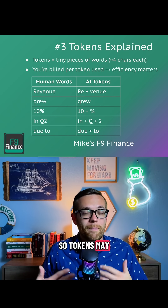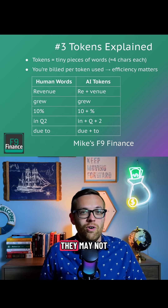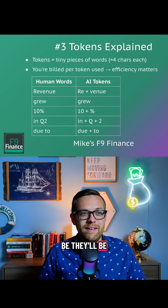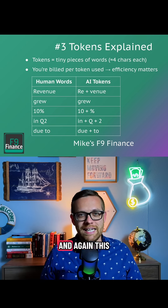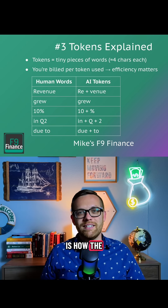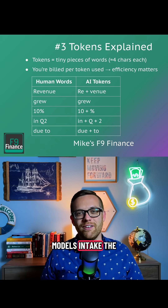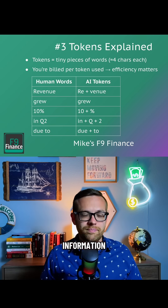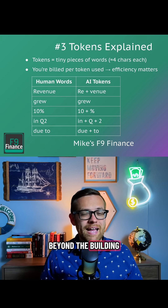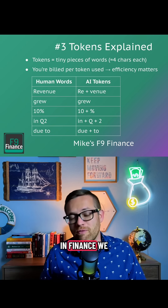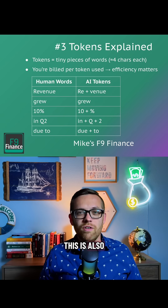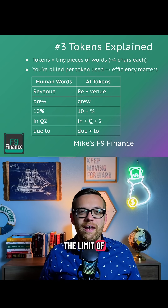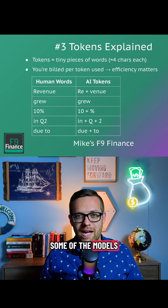So tokens may be a full word, or they may not be — they'll be about four characters. This is how AI models intake information. And one step beyond the billing, which we know in finance we all care about: this is also the limit of some of the models. Models have token limits of what they can remember and what they can process.